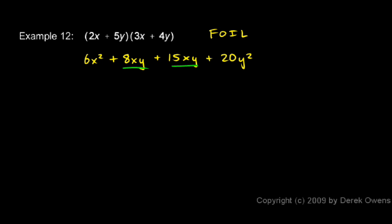Now let's combine the two like terms. We'll keep our 6x squared. 8xy plus 15xy gives me a total of 23xy. And then we still have the 20y squared. And that's our answer.